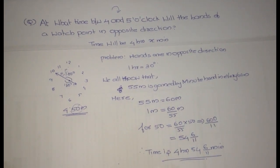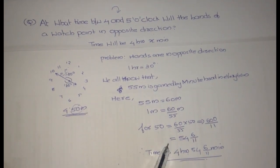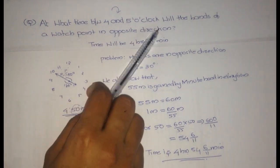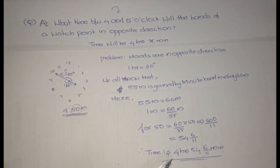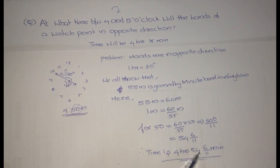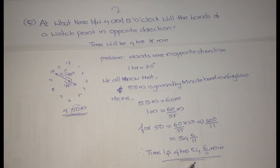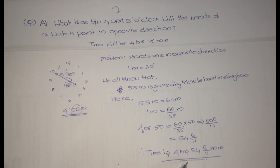Hence we can say that the time between 4 and 5 o'clock where the hands are in opposite direction is 4 hours 54 6/11 minutes. If you don't understand or if you have any doubt, please comment. Thank you.